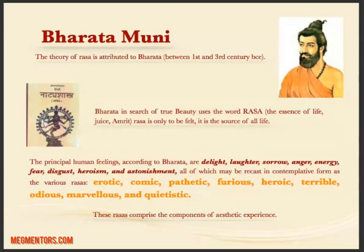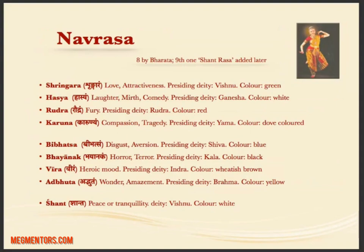Bharat Muni described eight forms of Ras, and the ninth — Shant Ras — was added later. Shrinagar Ras is about love, cajoling your beloved, and decorating yourself. Rudra is anger; Shaurya or Veer is heroism; Karunya means compassion; Vibhats means disgust; Bhayanak is horror; Adbhut is amazement, awe, and admiration. Shant Ras is primarily Bhakti Ras — bhajans and devotional songs belong to this particular Ras. Eight were given by Bharat Muni and the ninth was added later.